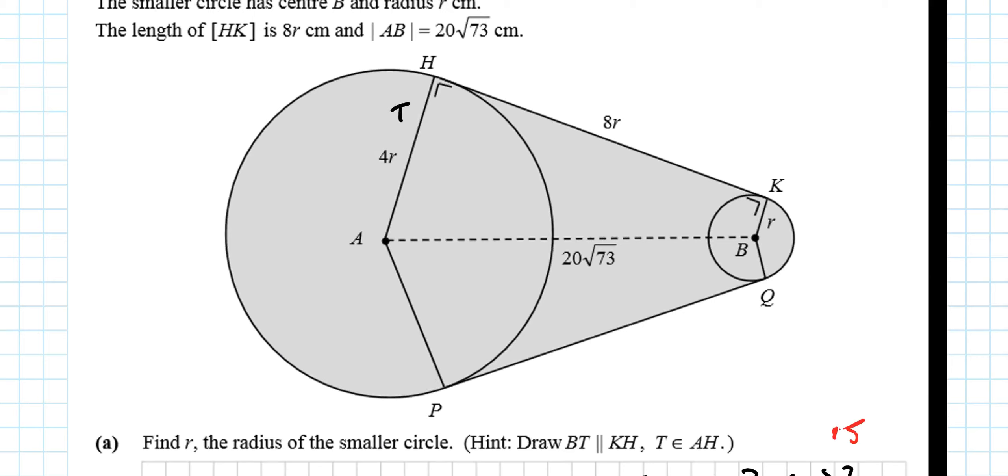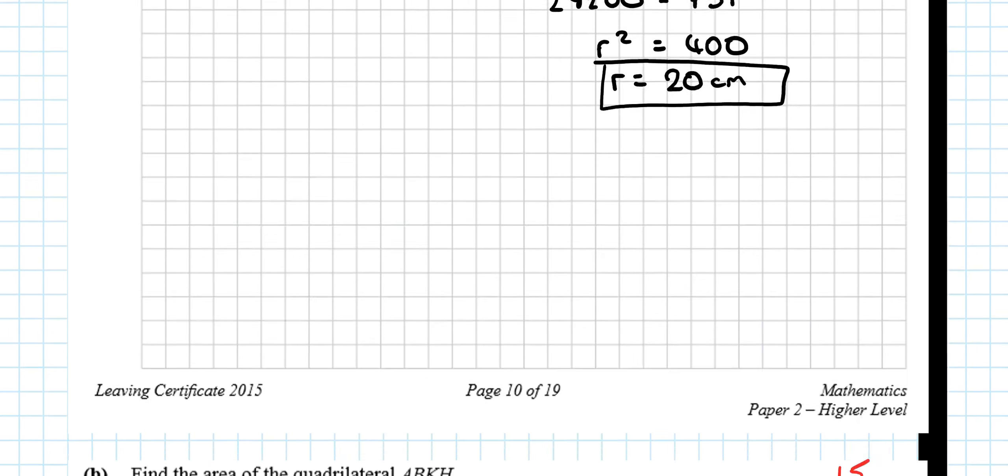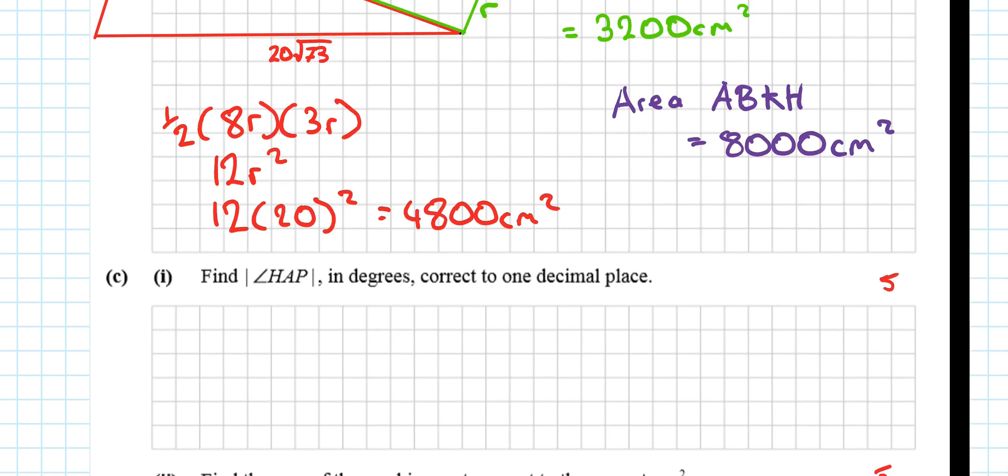Find angle HAP in degrees, correct to one decimal place. Where is HAP? Find HAP. This angle right here. No, that's not that angle here. It's this angle right here, HAP. Well, if I found this angle and called it theta, well, that's going to be the same as this angle here, because it's a symmetrical shape. So, HAP is going to be theta plus theta, or 2 theta.